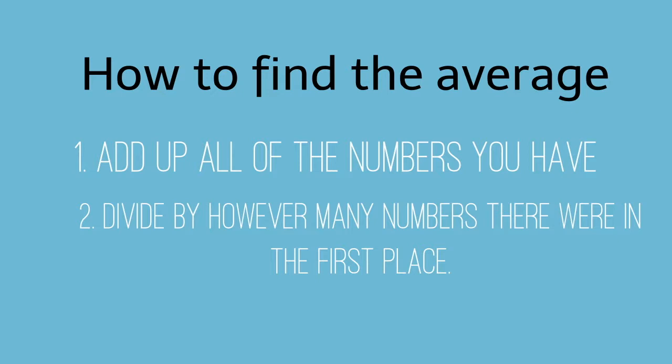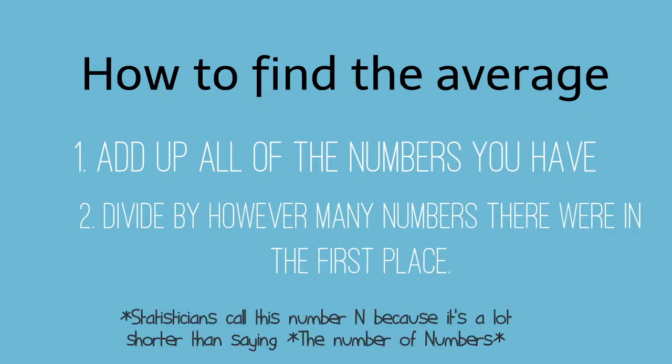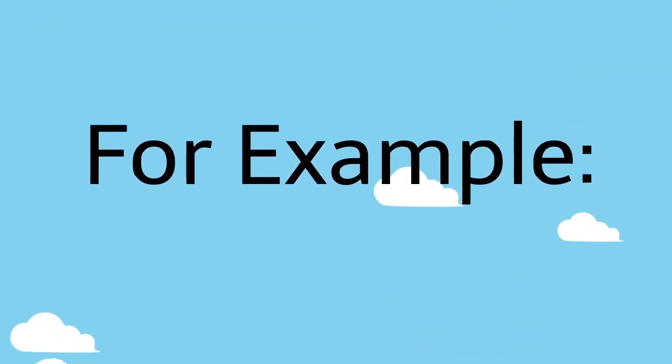Add up all the numbers you have. Divide by however many numbers there were in the first place. Statisticians call this number n because it's a lot shorter than saying the number of numbers.